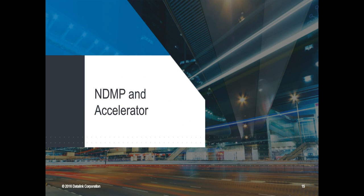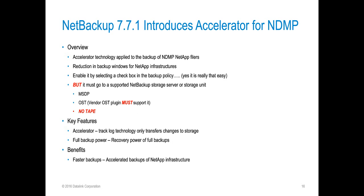Now let's talk about NDMP and Accelerator. When performing NDMP backups from a NAS device, you're often backing up large amounts of data — CIFS shares, NFS exports, large volumes — which takes a long time. There's a feature in NetBackup 7.7.1 that helps with backing up those large data sets. Accelerator was introduced in 7.6 for VMware and physical-type server backups, but in 7.7.1 it was introduced for NDMP. Accelerator dramatically reduces the backup window for NDMP-type backups.